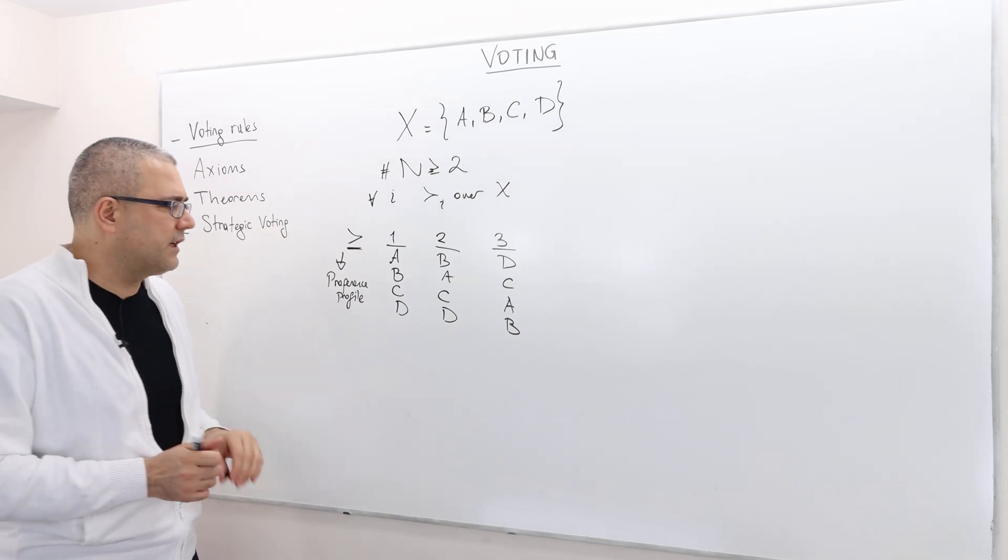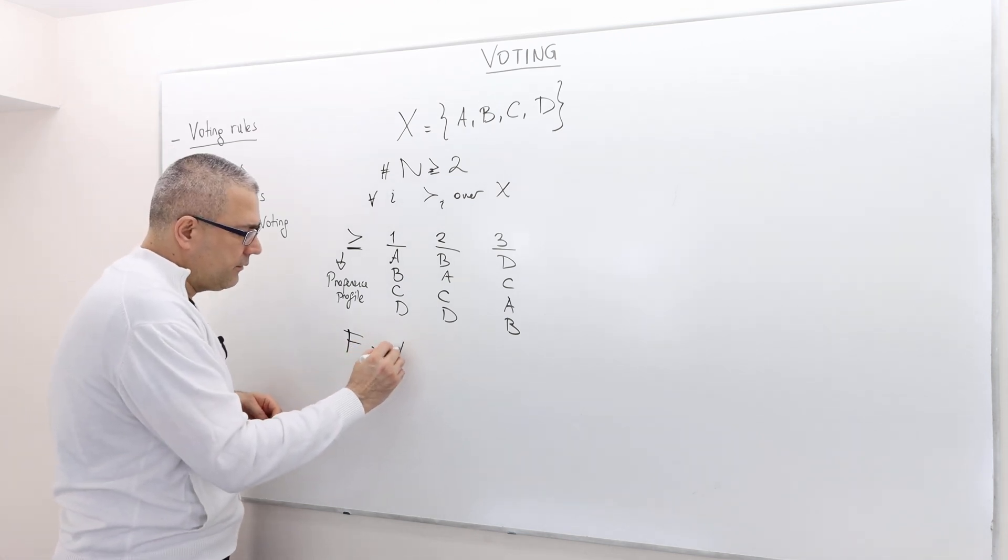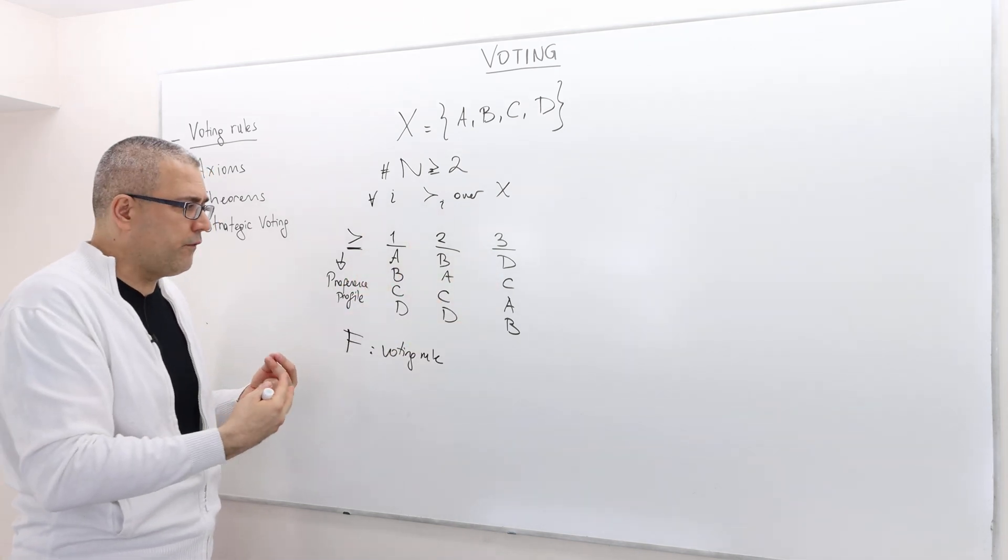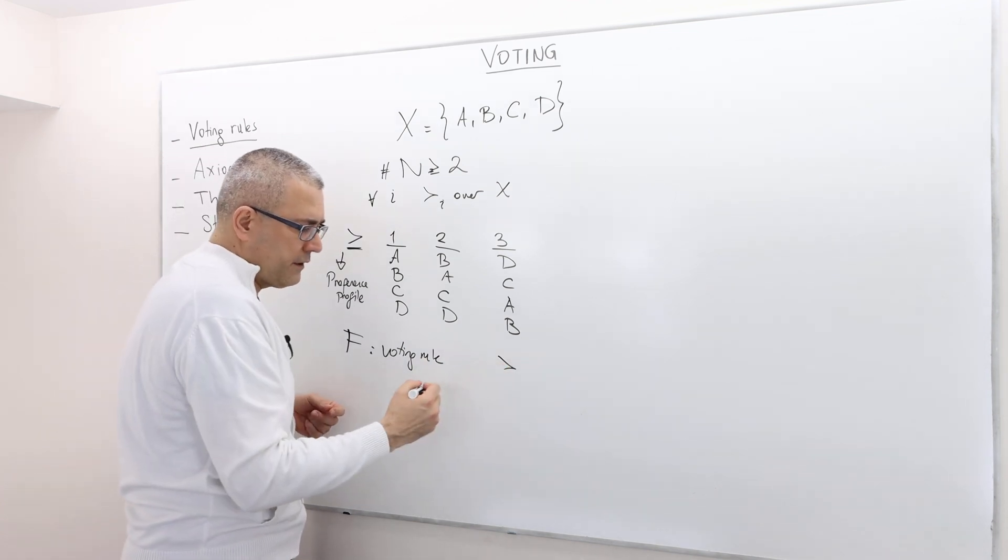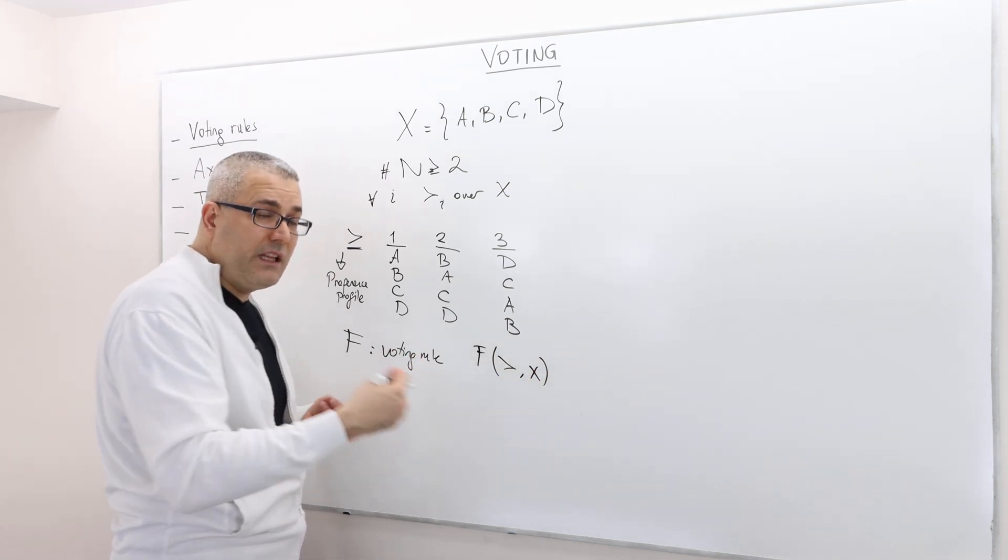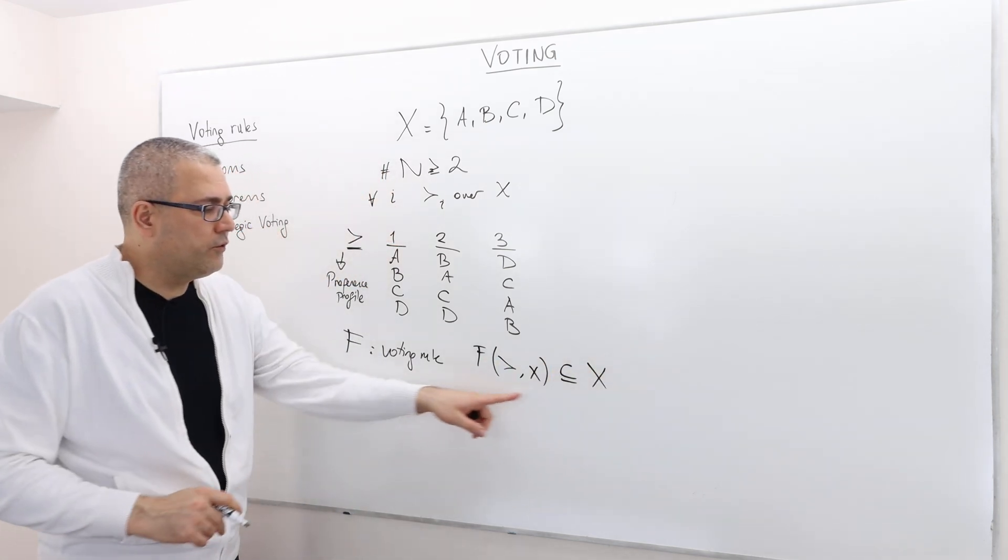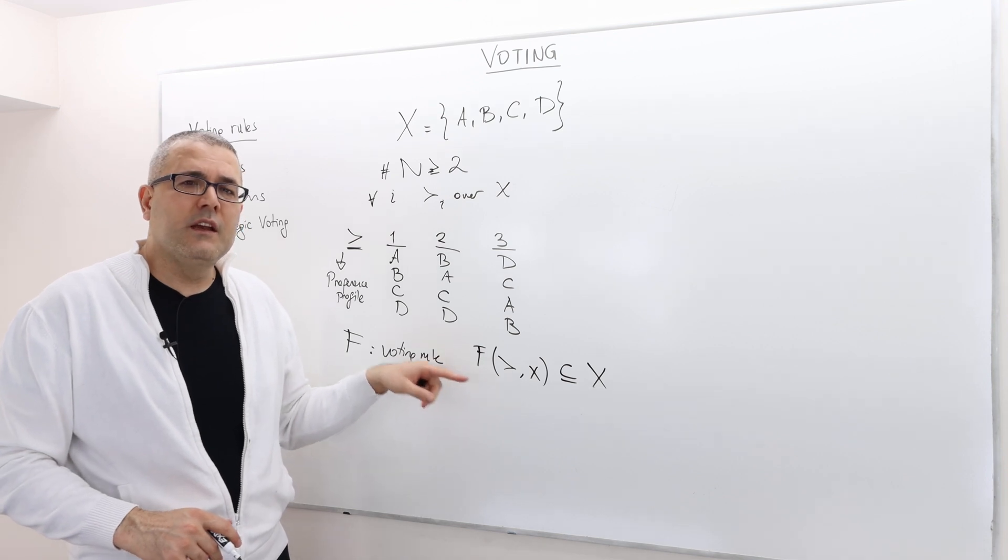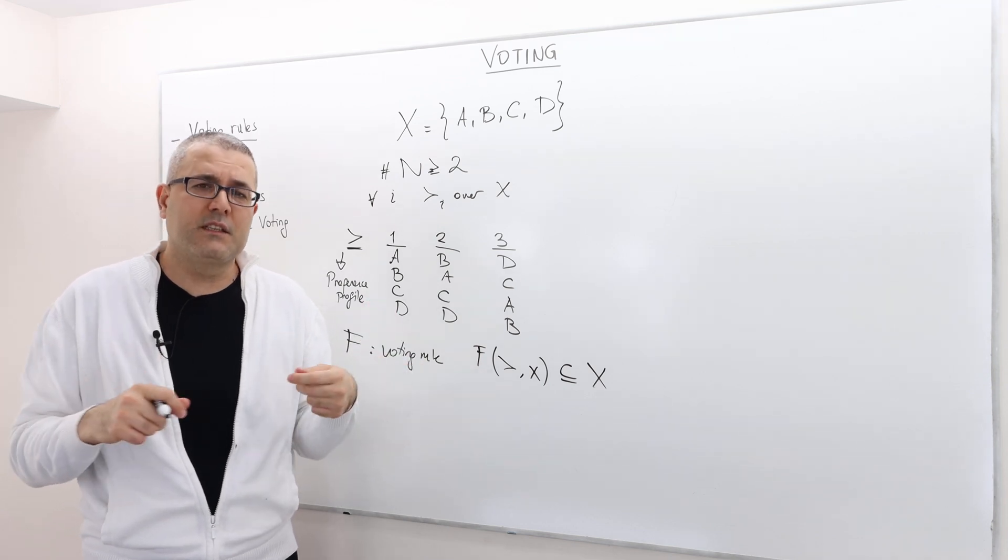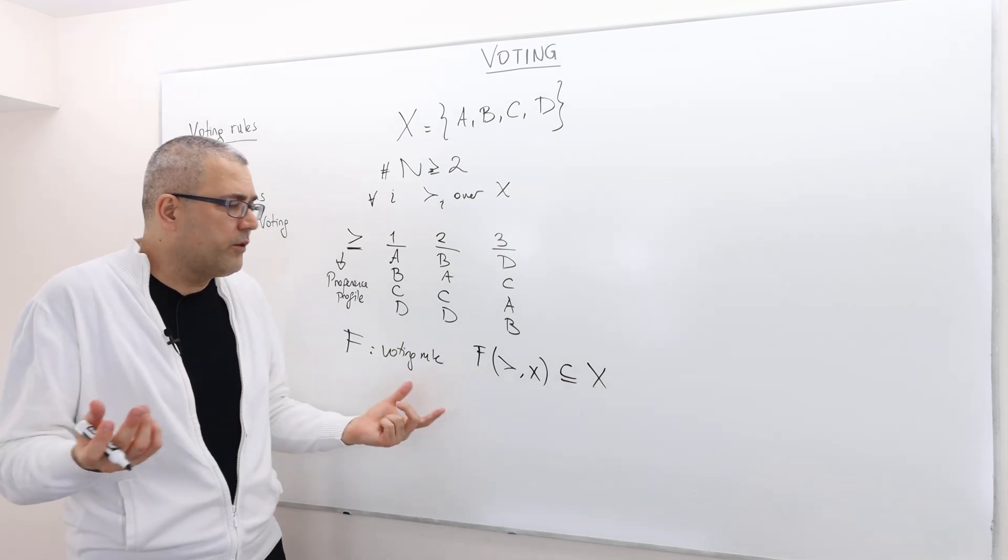We are going to look at some rules. I'm going to denote them as F. F is a voting rule, and the voting rule maps each preference profile to some outcome. Give me your preference profile, and the voting rule chooses one alternative, at least one alternative, from this set X. So it is a subset of X. Some voting rules always give us a unique outcome, some sometimes give us multiple outcomes.